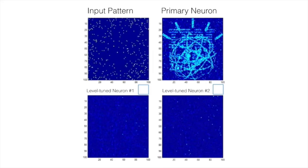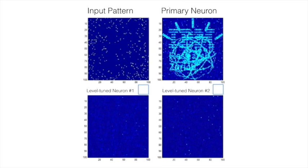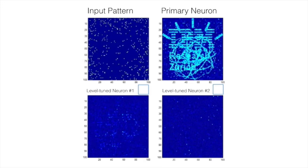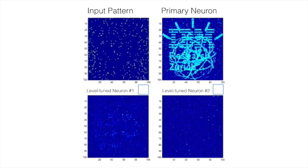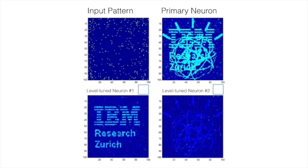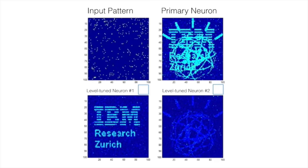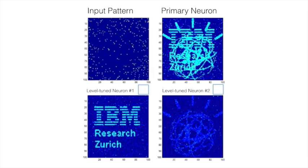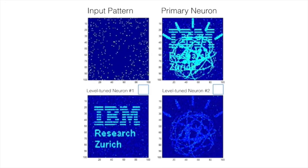The Watson avatar and IBM research patterns appear at certain time instances, whereas noise appears in the rest of the pixels. The synapses of the corresponding level-tuned neurons learn the patterns without any further computation in an unsupervised way.